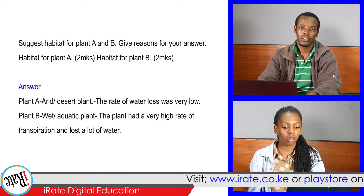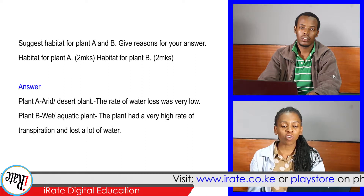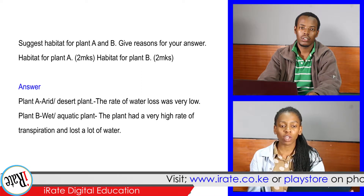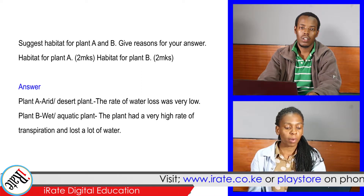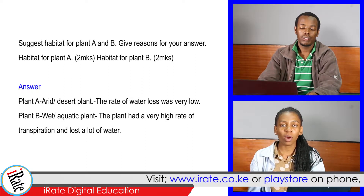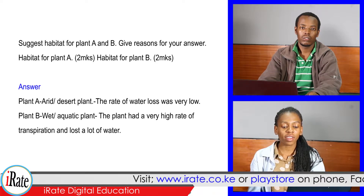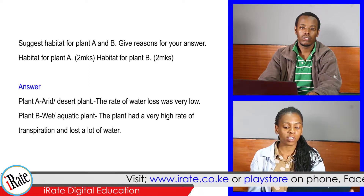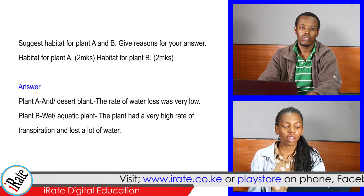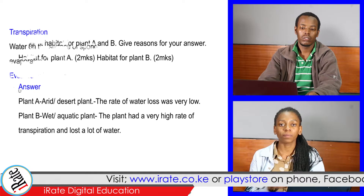Plant A is an arid or desert plant. The rate of water loss was very low. Plant B is a wet or aquatic plant. The plant had a very high rate of transpiration and lost a lot of water.